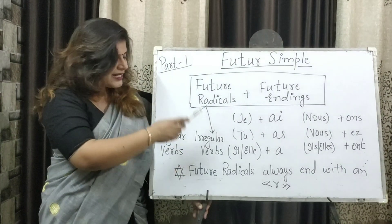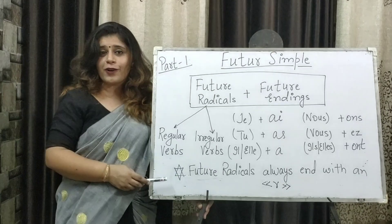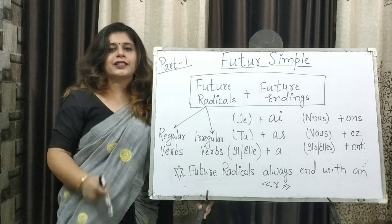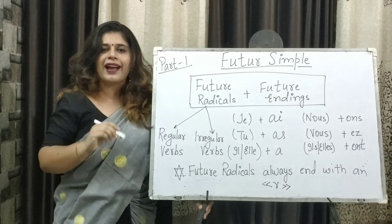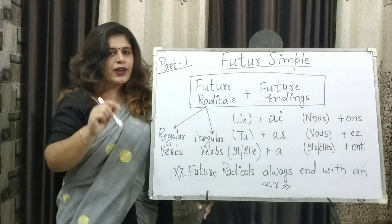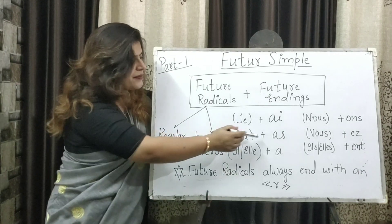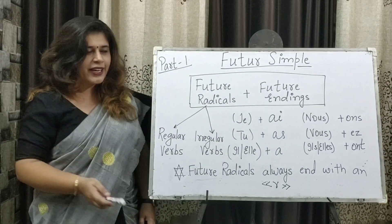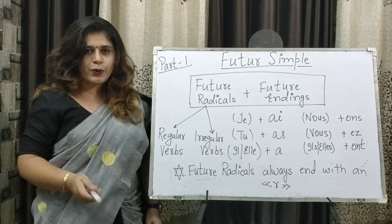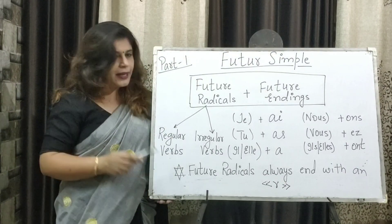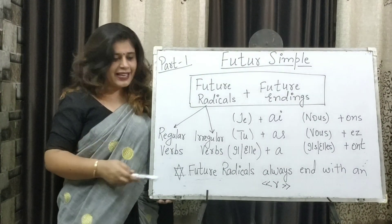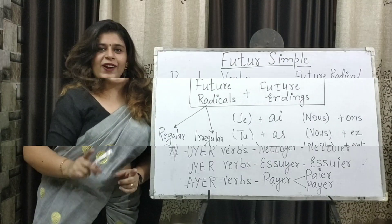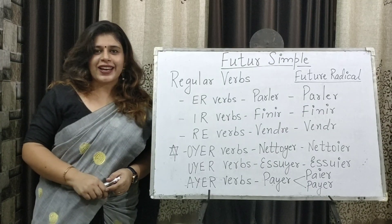When we talk about future radicals, we categorize our verbs into regular and irregular categories. An important note is that all the future radicals will always end with an R. So if we have the R and we have the endings, we can easily identify the tense as future. In part 1, we are going to learn the future tense of all the regular verbs.